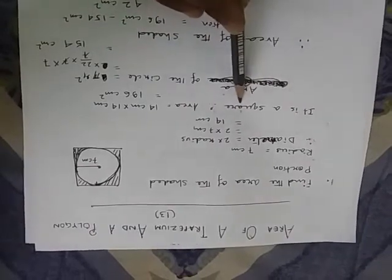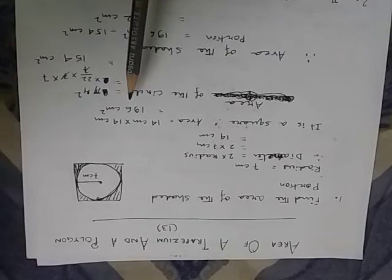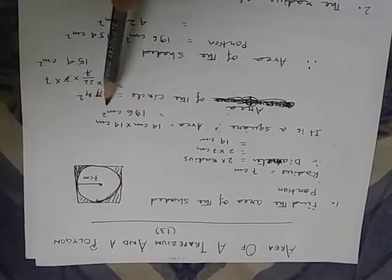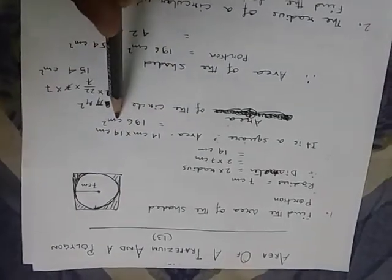And since it is a square, so square area is 14 into 14, which is exactly 196 cm square. So the area of the whole square is 196 cm.